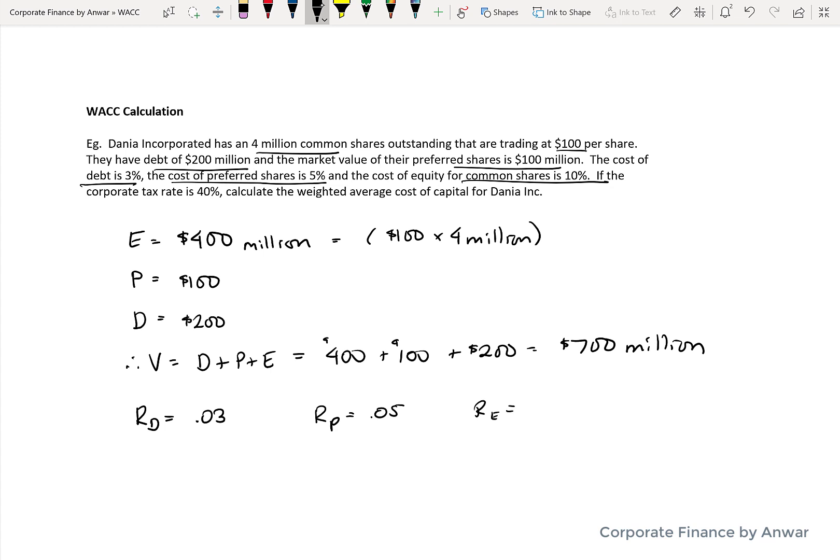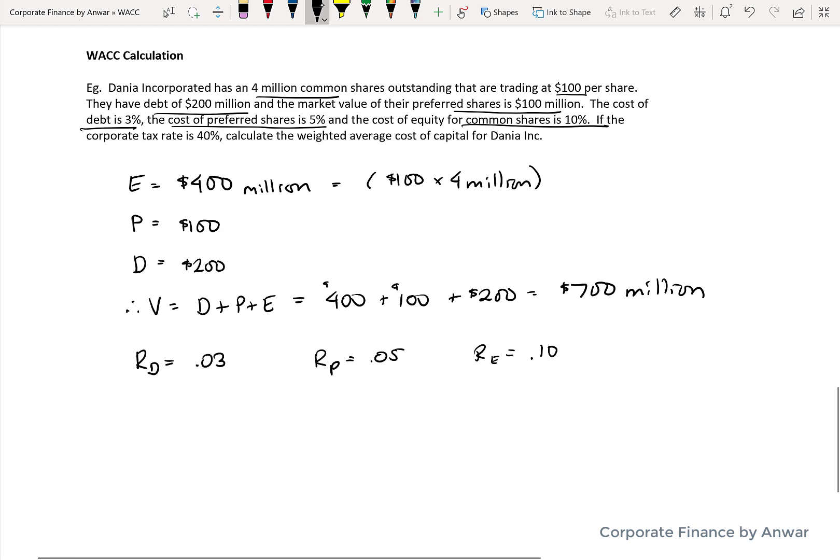The cost of equity or common shares, in this case, is given as 10%, and the corporate tax rate is 40% for the company. And that's going to be relevant to debt because it's tax deductible.